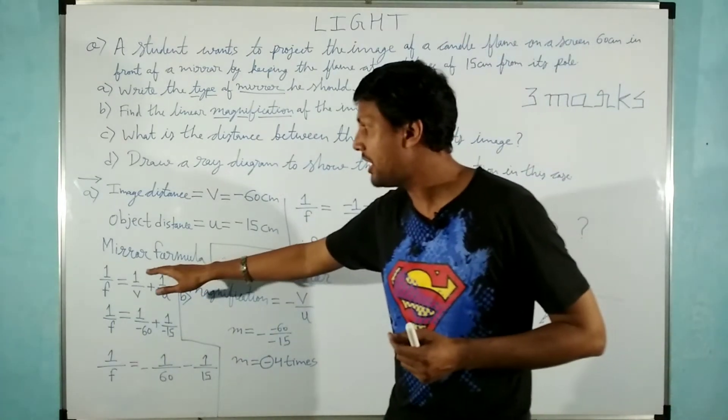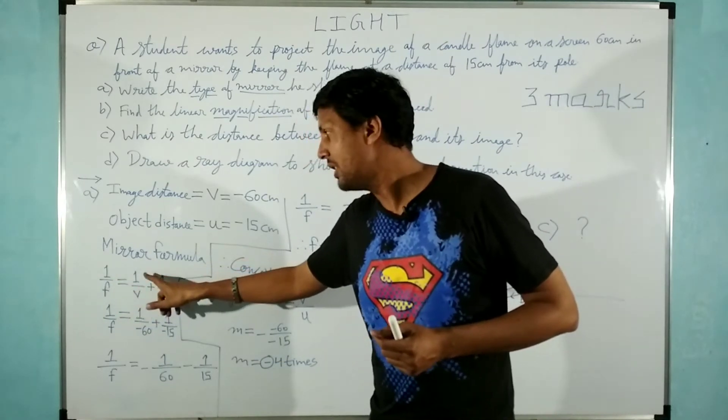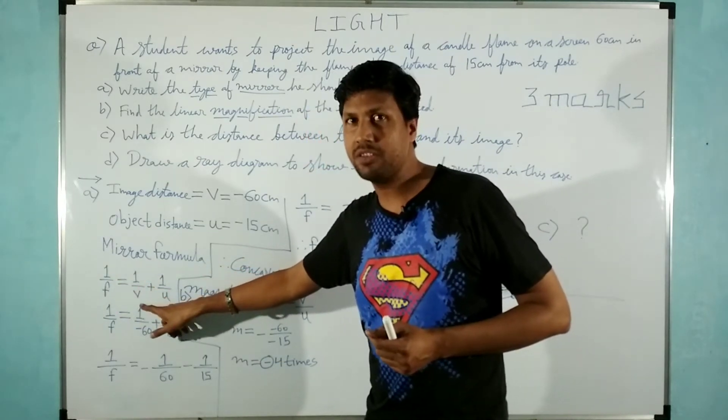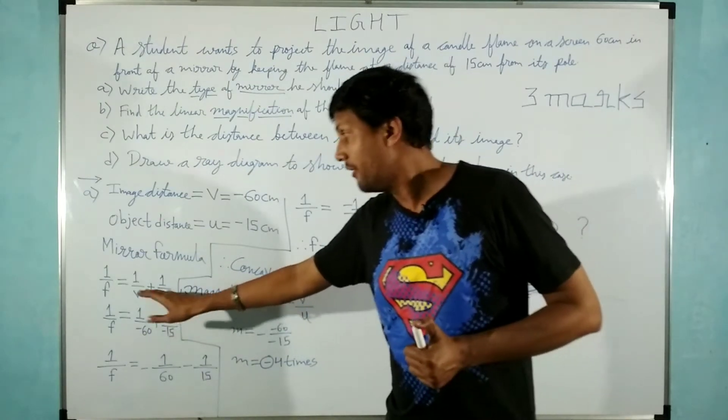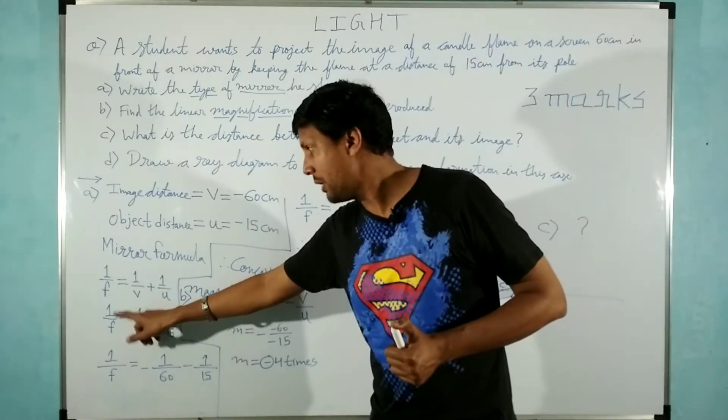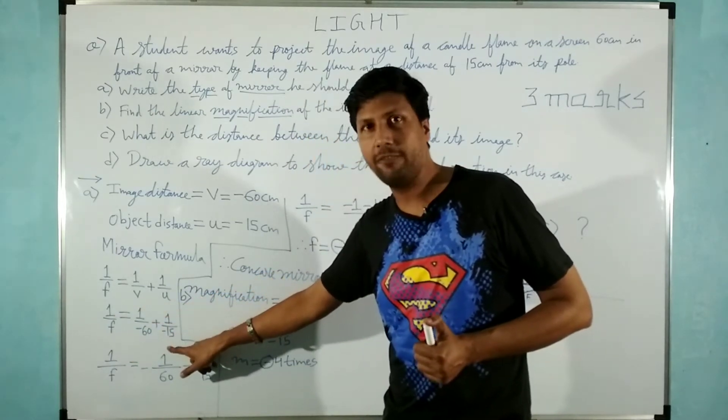Now I have made a mirror formula. One reciprocal of focal length is equal to reciprocal of image distance plus reciprocal of object distance. That's it. Then what happens? One upon f equals one upon minus 60 plus one upon minus 15.